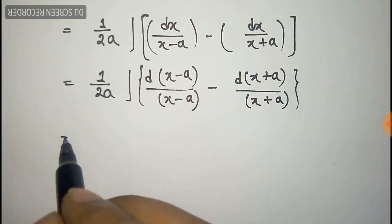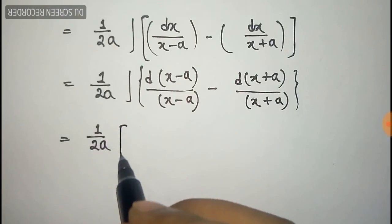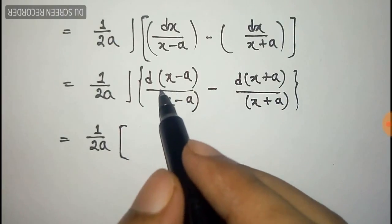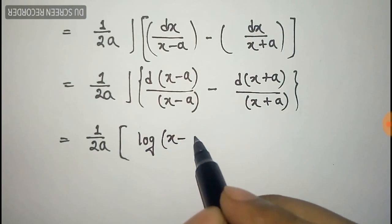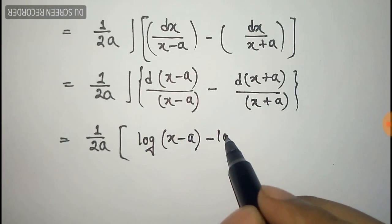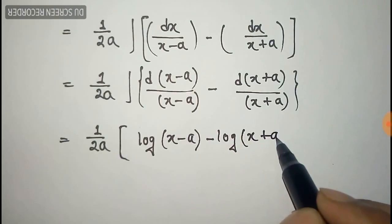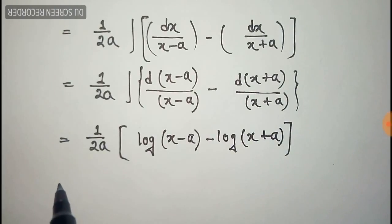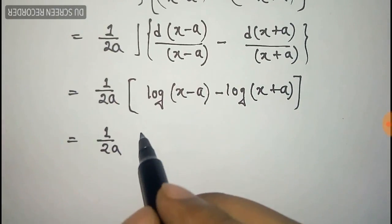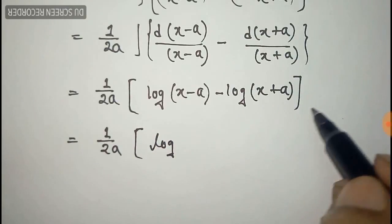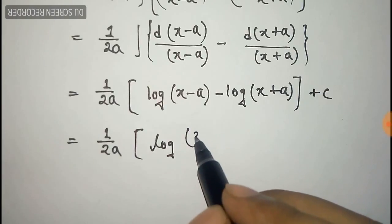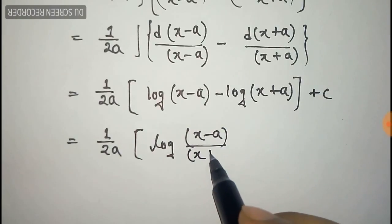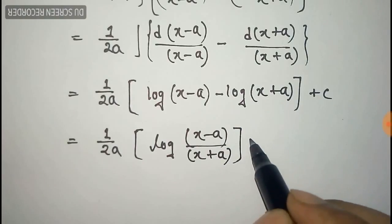So that we can use a formula here. Now the upper part is the derivative of the below part, so here we can use the formula of log of mod of the below part, that is x minus a, minus log of mod of the below part is x plus a. So there will be constant, and this can be written as log of x minus a by x plus a plus constant c.